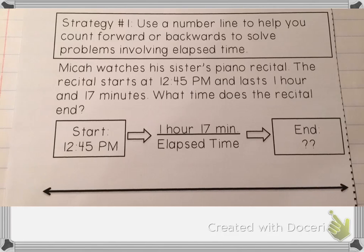Some important information in the problem tells us that it starts at 12:45 p.m., so that's our start time. It lasts 1 hour and 17 minutes. That's our elapsed time. That's how much time passes between when the recital starts and when it ends. Our question asks what time does the recital end, so we are looking for the end time.